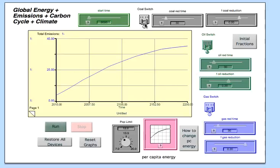Now we're going to reduce all of our different fossil fuel uses, so we need to turn on the coal switch, the oil switch, and the gas switch.